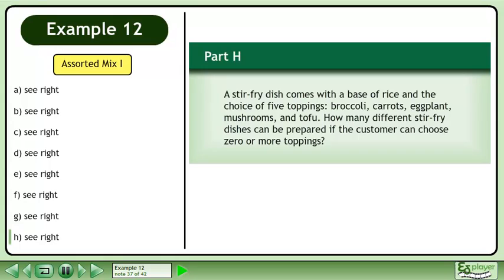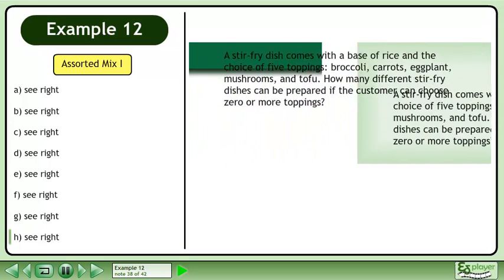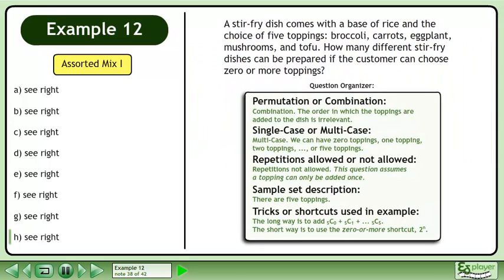Now we'll move on to Part H. A stir-fry dish comes with a base of rice and the choice of five toppings: broccoli, carrots, eggplant, mushrooms, and tofu. How many different stir-fry dishes can be prepared if the customer can choose zero or more toppings? Pause the video and organize the information about this question.